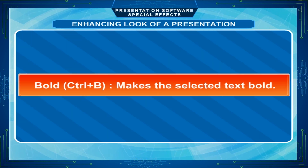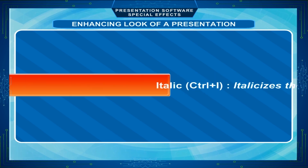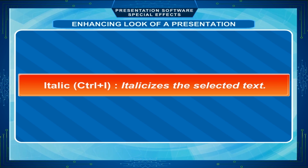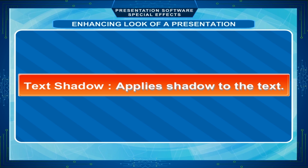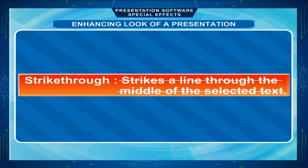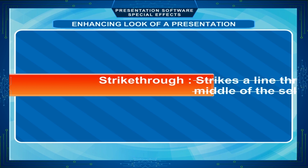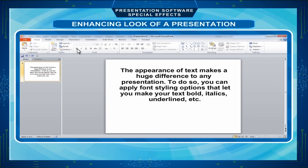Bold (Ctrl+B) makes the selected text bold. Italic (Ctrl+I) italicizes the selected text. Underline (Ctrl+U) underlines the selected text. Text Shadow applies a shadow to the text. Strikethrough strikes a line through the middle of the selected text. Just click on any font style option to apply it to the selected text.